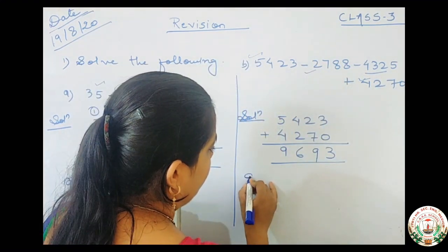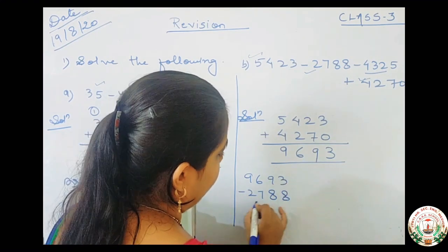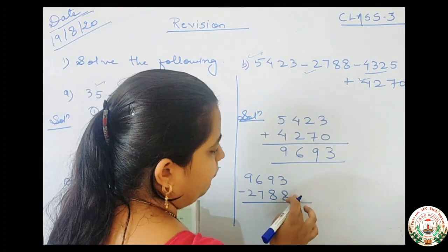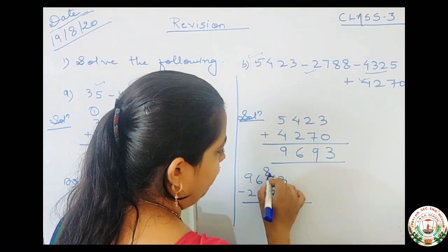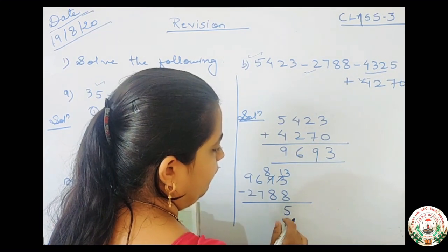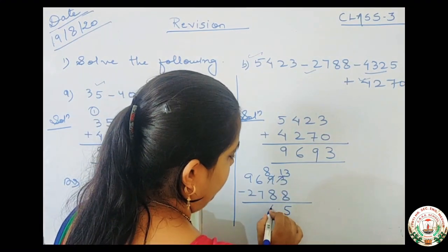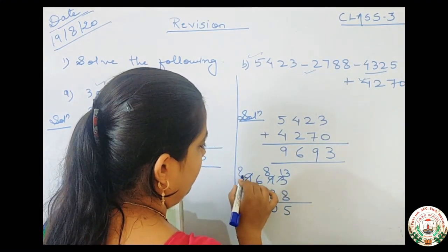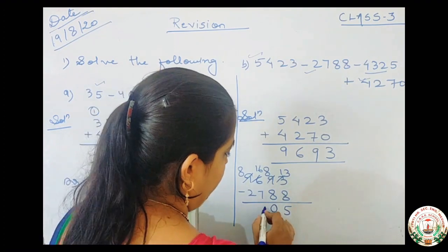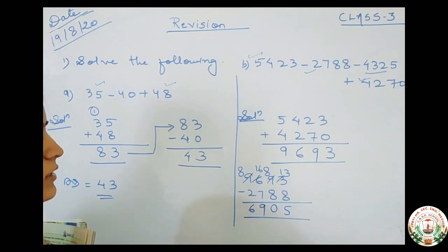First we subtract 2788 from 9693. Take carry where necessary. From 3 we can't subtract 8, so we take carry: 13 minus 8 is 5. 8 minus 8 is 0. 6 minus 7 not possible, so 16 minus 7 is 9. 8 minus 2 is 6. The answer is 6905.